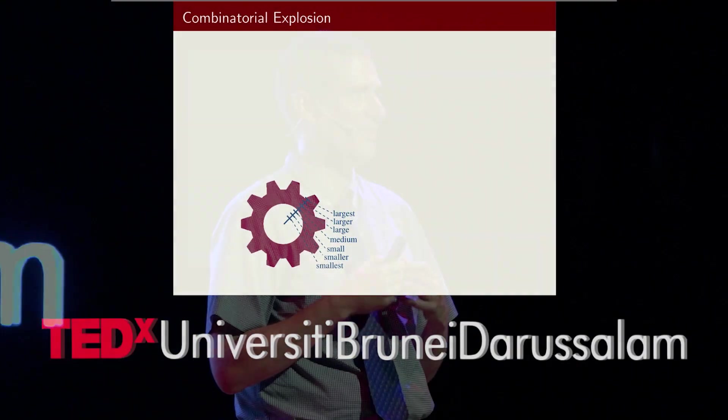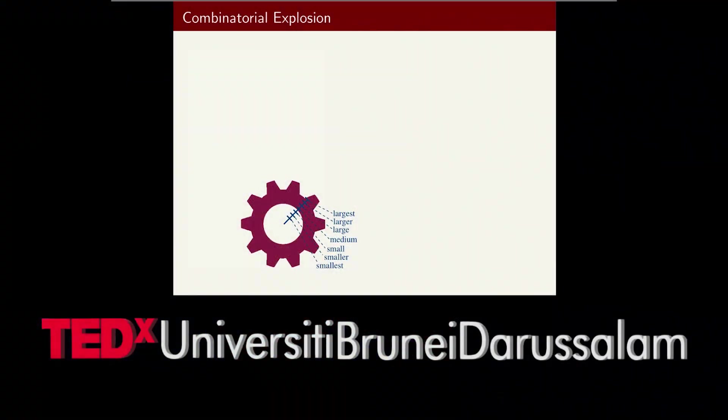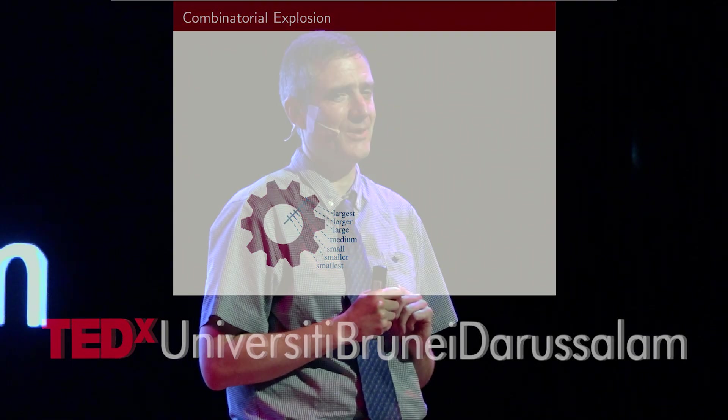Why is it a problem? Imagine we want to design a gear. For a gear, the most important factor is the diameter — the radius of the gear. For one gear, I could choose seven steps — how big or small that gear would be, from smallest to medium to largest. So for this one gear, I have seven design choices.